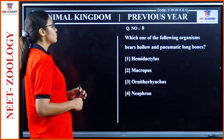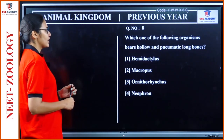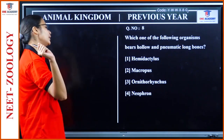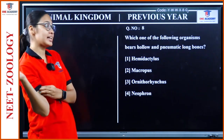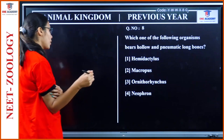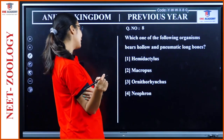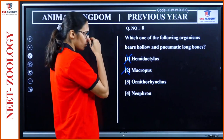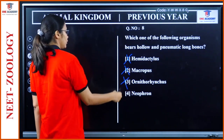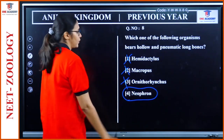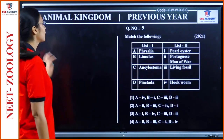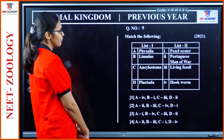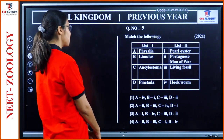Question 8: 'Which organism bears hollow and pneumatic long bones?' Hollow and pneumatic long bones are characteristic of birds. Hemidricalus is a wild lizard — no. Macropus is kangaroo — no. Ornithorhynchus is platypus — no. Neophron is a vulture — yes, it is a bird. So option 4.